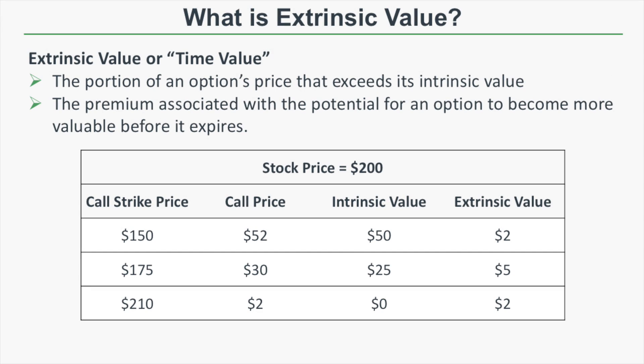So what is extrinsic value? Extrinsic value is the portion of an option's price that exceeds its intrinsic value. Another way to conceptualize extrinsic value is the premium associated with the potential for an option to become more valuable before it expires. For this reason, extrinsic value is sometimes referred to as time value. Let's look at the table below to see how intrinsic and extrinsic value are applied to options.